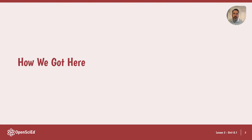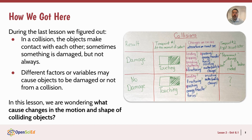Let's recap how we got to this lesson. We're coming off of the anchoring phenomena, where kids talked about things that sometimes break and sometimes don't in a collision. We figured out that things need to make contact for that to happen, and there are probably different factors and variables involved — maybe those have something to do with why things get damaged or don't in a collision. So we're wondering what actually causes the changes in motion and shape of objects when they collide.